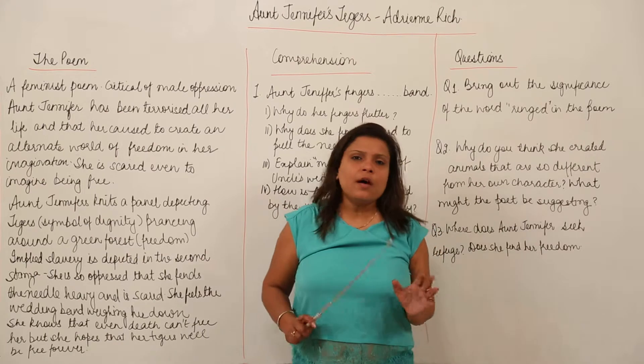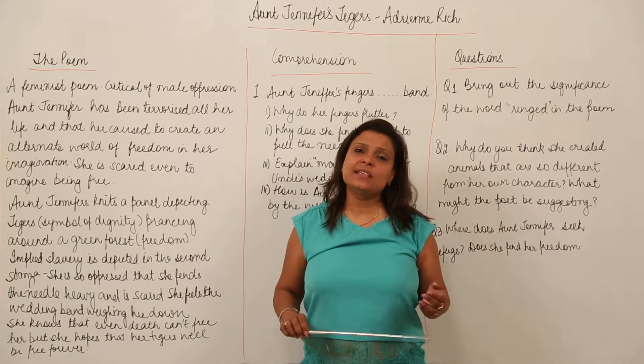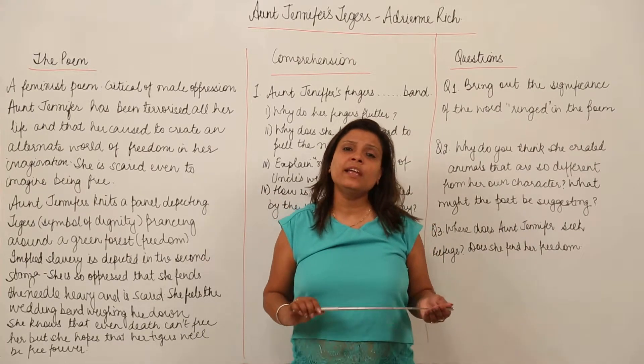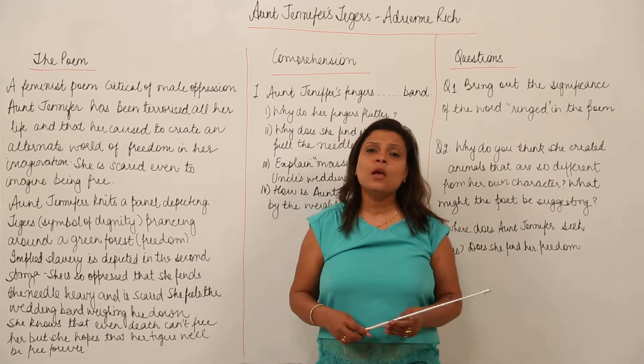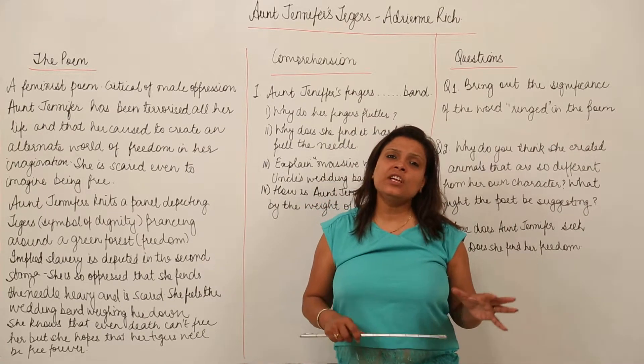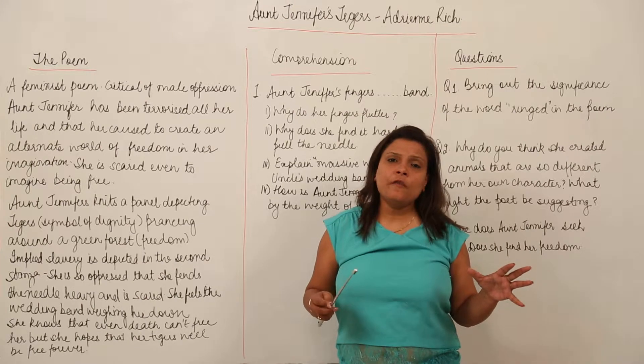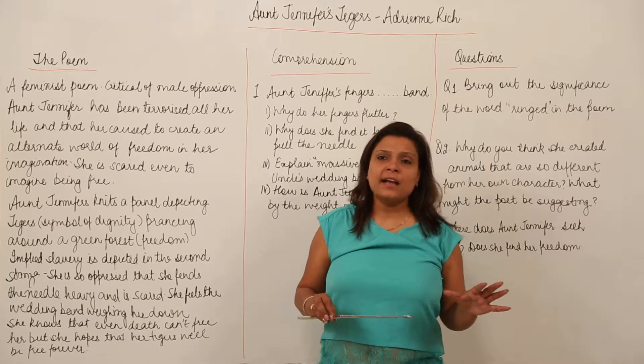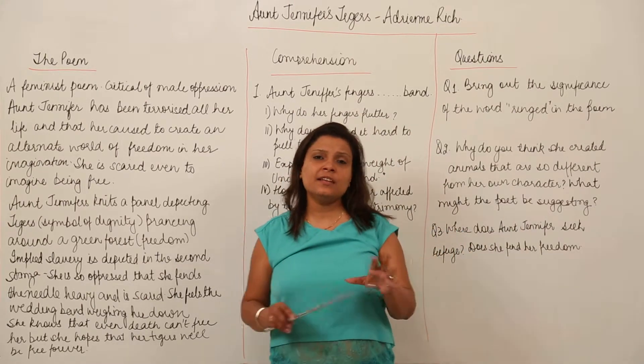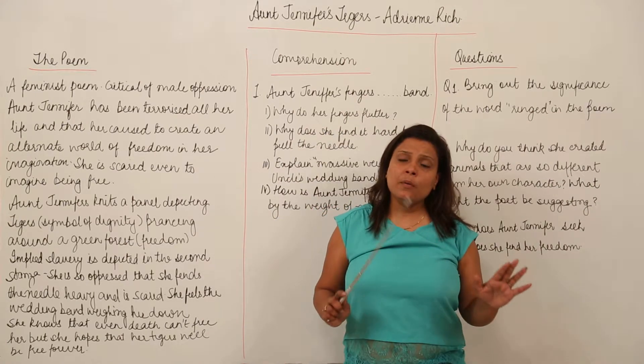has been terrorized all her life and now she has taken the escape route of knitting tapestries with wool where she creates a world which is free of oppression and terror and she has those tigers in a green forest roaming around,